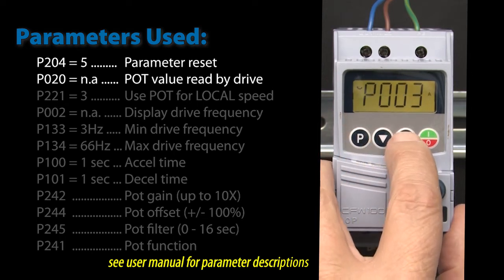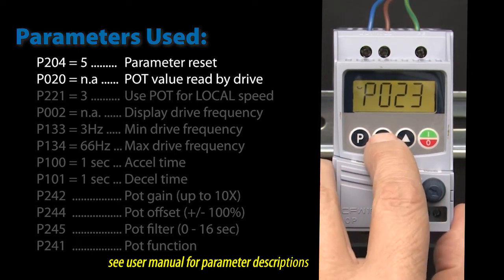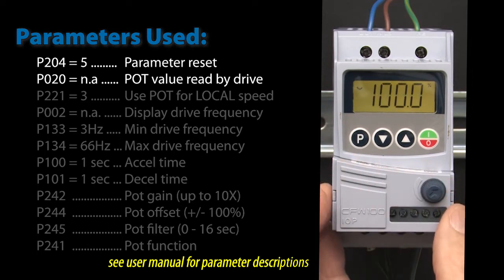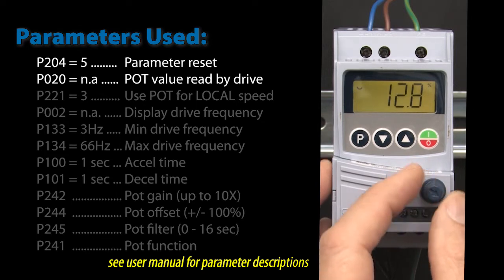If I go to parameter 20, which shows us the actual potentiometer value read by the drive and turn the knob, we see the value change. OK, so we know the drive sees the potentiometer value. What's wrong?